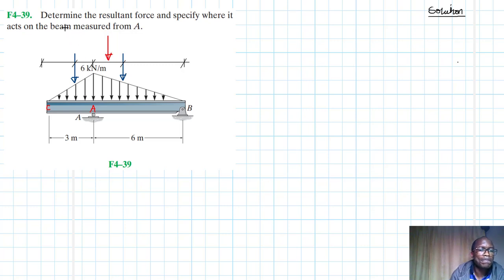Let's indicate the dimensions. These are triangular distributed forces and the equivalent location where it will be located from C will be two-thirds of three, which is just equal to two, and then here it will be one-third of three, which is equal to one.